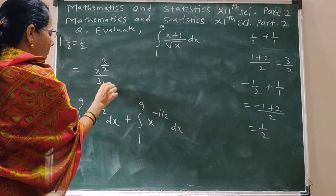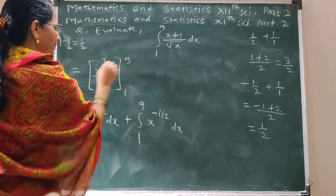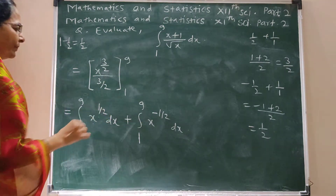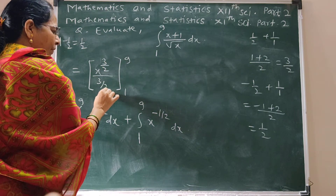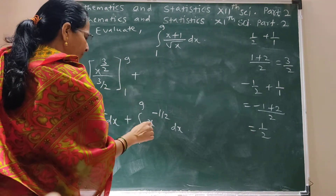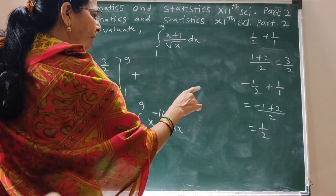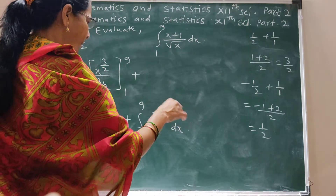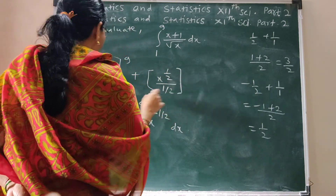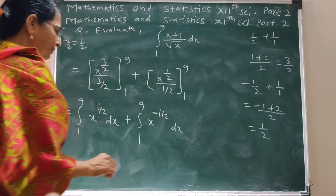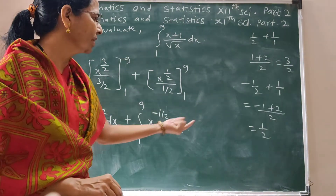Upon 3 by 2. Then x raised to half, and adding half gives x raised to half upon half. With limits 1 to 9: integration gives x raised to 3 by 2 upon 3 by 2, plus x raised to half upon half, with limits 1 to 9.